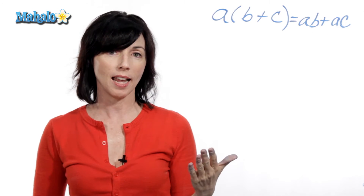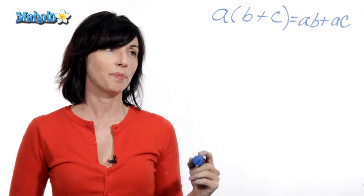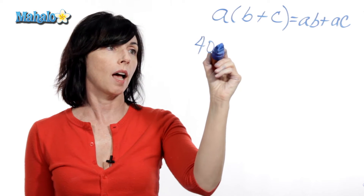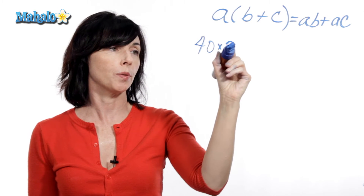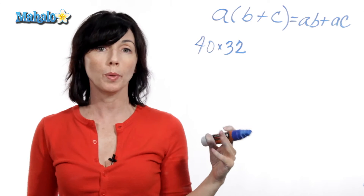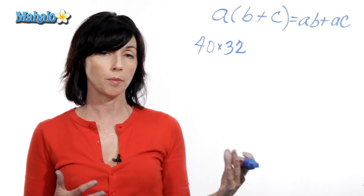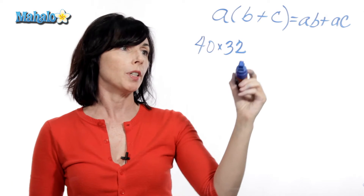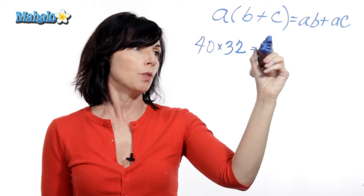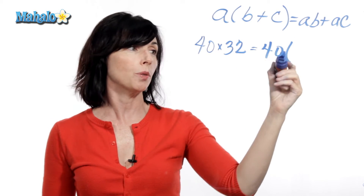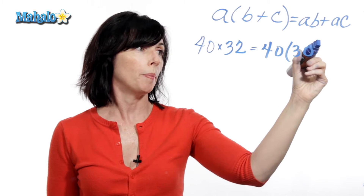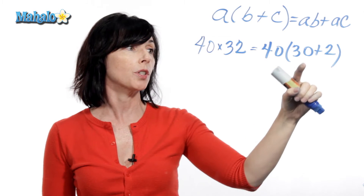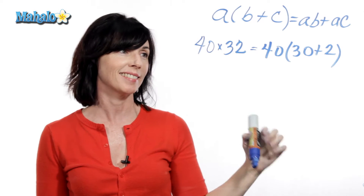So let's use it, and I think you'll see how useful this can be. Suppose we have 40 times 32. We can line these up and multiply them the normal way, but let's do it with the distributive property. Instead of 32, let's write it like this: 32 is just equal to 30 plus 2. So now let's use the distributive property to calculate it.